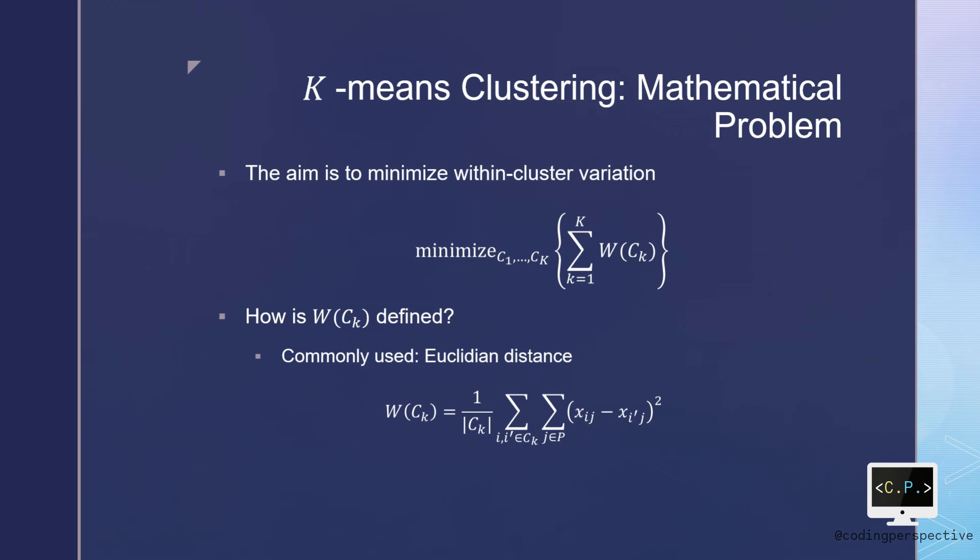In words, the within-cluster variation for the kth cluster is the sum of all pairwise squared Euclidean distances between the observations in the kth cluster divided by the total number of observations in the kth cluster.